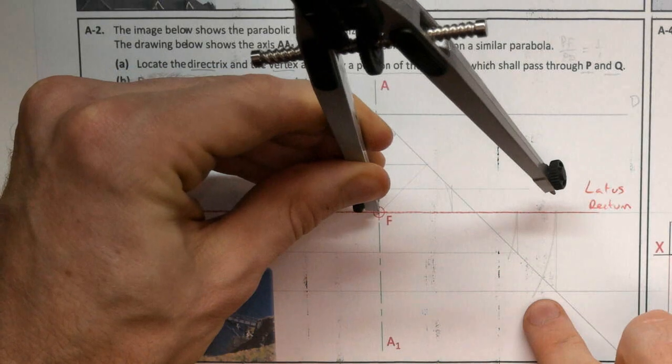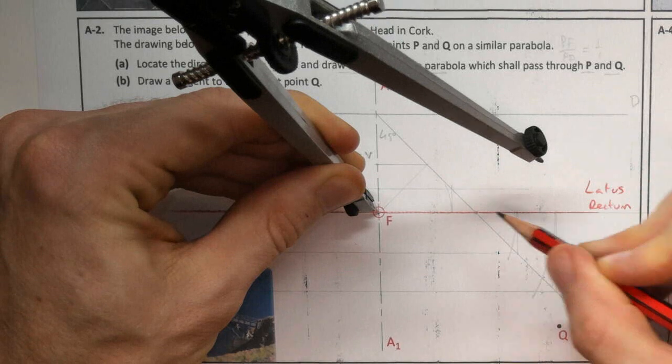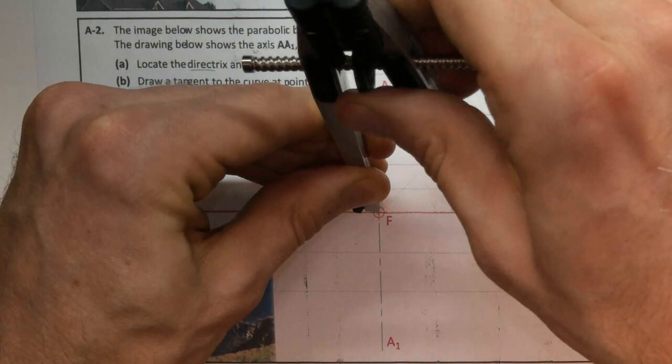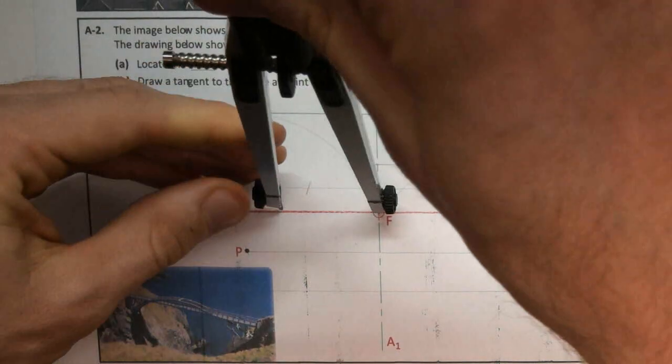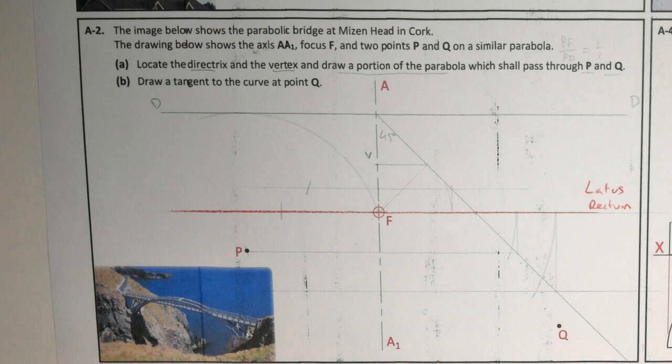Swing an arc down. That gives me another point. And just after remembering that this is also a point on the curve. So on my latus rectum there, from F, I'll transfer that over. Now I can draw my curve.